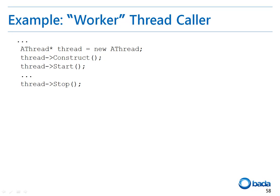This sample code shows how to call the thread that was created in the previous example. You need to create, construct, and then start the thread. Then the thread runs. To stop the thread in progress, call the stop function. Then the thread stops, and the onStop function of the thread is called.